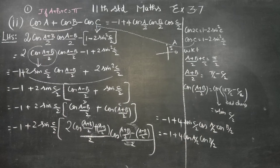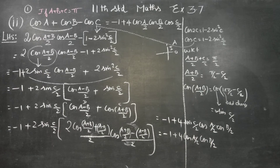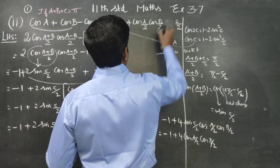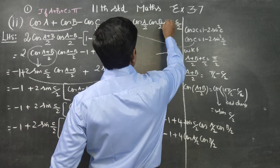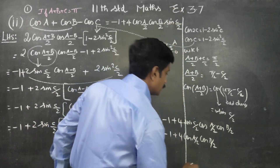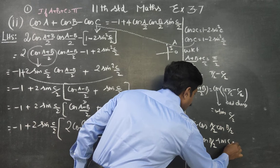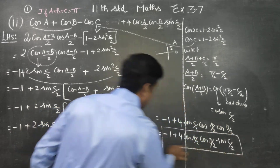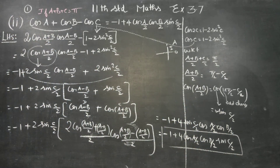I will check the answer once again. Yeah, book question is sin(C/2) — I had written it wrongly. It is sin(C/2). Therefore, my final answer will be minus 1 plus 4 cos(A/2) · cos(B/2) · sin(C/2). The sum is fully complete.